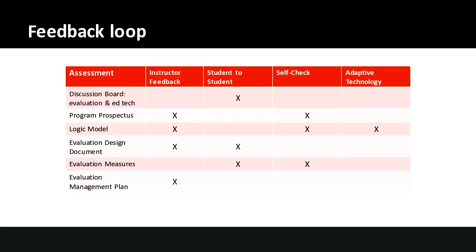I want to be really intentional about designing feedback into the course. The different ways students receive feedback from me include grades, comments, and emails. Also, are there ways students can interact with each other and learn from each other? For instance, when students read through a journal article and respond with a critical reflection on the discussion board, they can learn from each other. There's an evaluation design document where students put a draft on a blog post and can get feedback from each other.